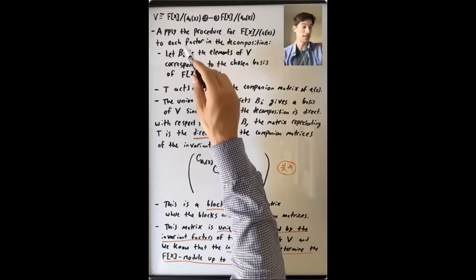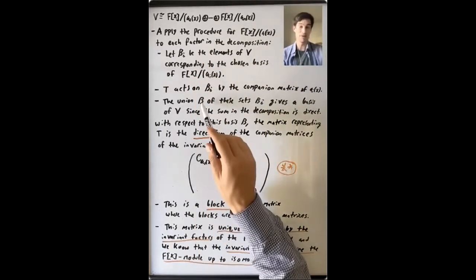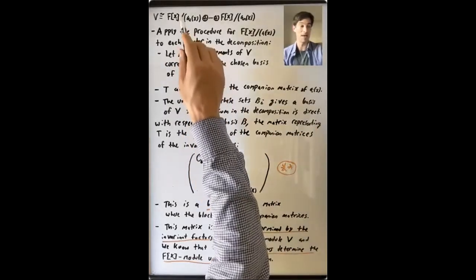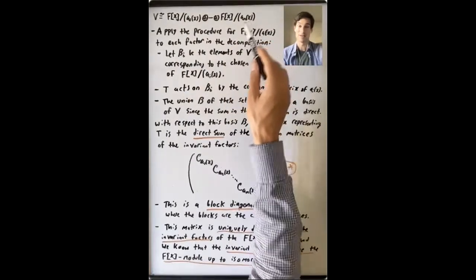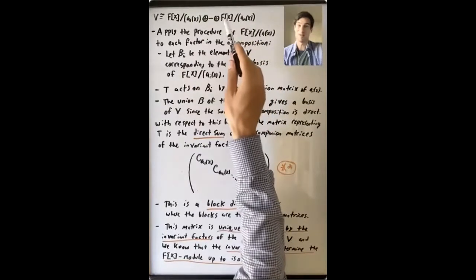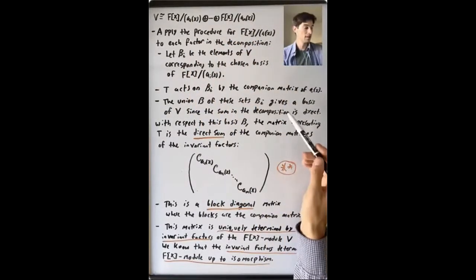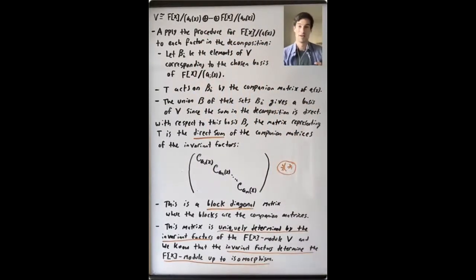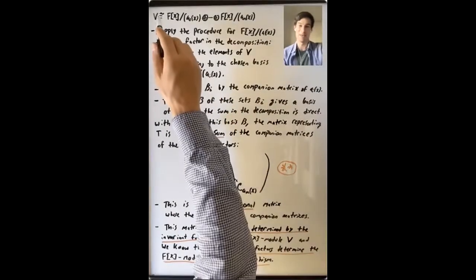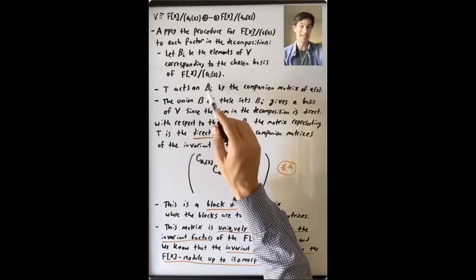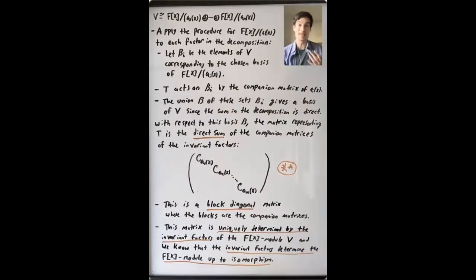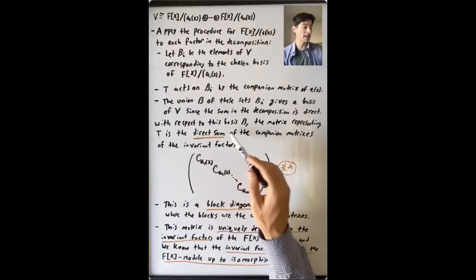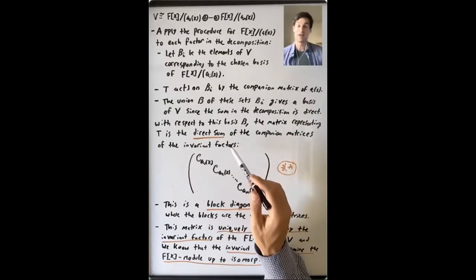T acts on V and on these Bᵢ. How does it act on these Bᵢ? T acts by the companion matrix of aᵢ. More precisely, you take the elements in Bᵢ, take their span to get a subspace of V, and T acts on that subspace. The matrix of the linear transformation T with respect to this chosen basis of this subspace is the companion matrix of aᵢ(x). Taking the union B of all the Bᵢ's gives a basis of V, because taking a basis for each piece of a direct sum and unioning them gives a basis for the direct sum. With respect to this basis B, the matrix representing T is the direct sum of the companion matrices of the invariant factors.